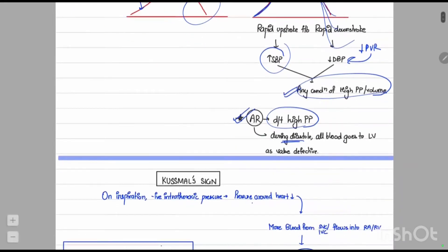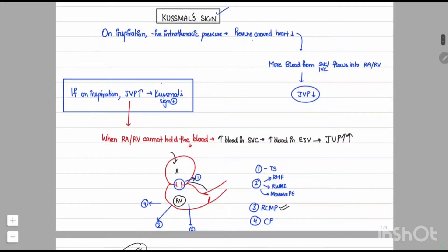Next we'll discuss Kussmaul's sign. Normally on inspiration, the lungs expand, intra-thoracic pressure becomes more negative, and more blood comes from the IVC to the right atrium. The pressures around the heart also decrease, so the right ventricle slightly expands and more blood flows from the SVC and IVC into the right atrium and right ventricle. As more blood flows from the SVC to the right atrium, there is less blood in the SVC and external jugular vein, so JVP decreases on inspiration.